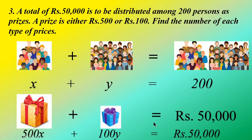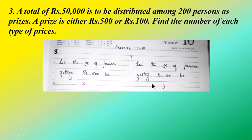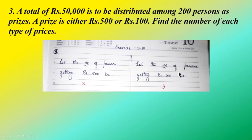For our exam, let us see how we are going to write this. According to the number of persons, we assign one set as x and another set of persons as y. So let the number of persons getting rupees 500 be x, and let the number of persons getting the prize type worth rupees 100 be y.